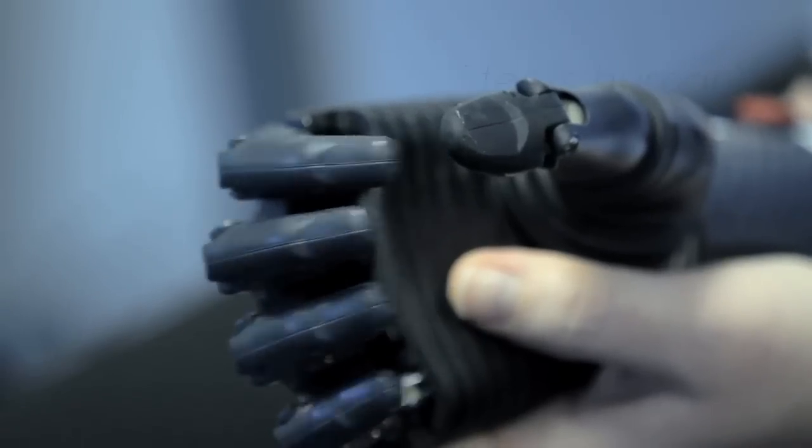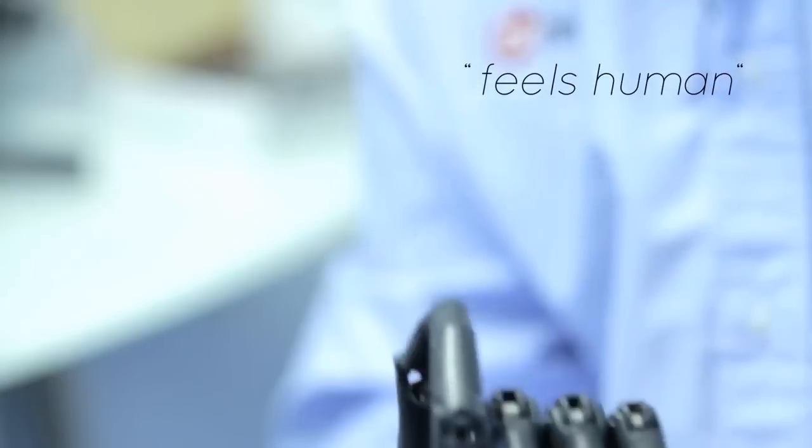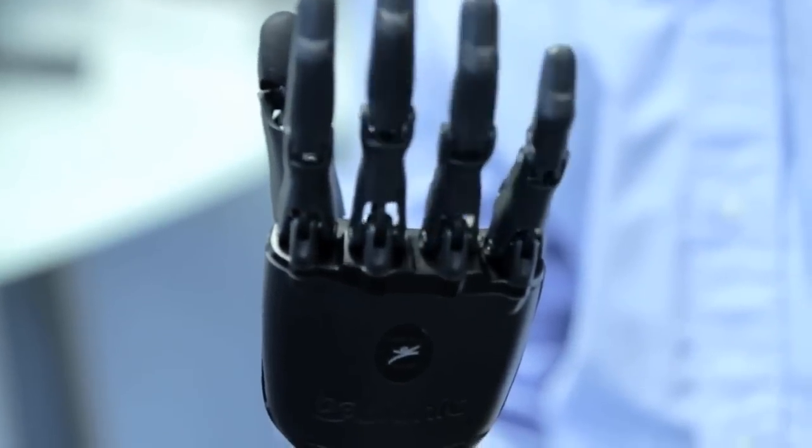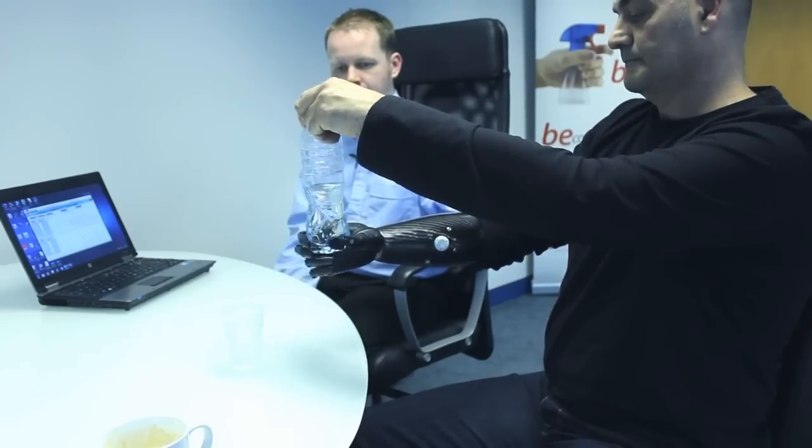Each digit of this front-line prosthetic has an individual motor creating compliant and conformable grips. A manually adjustable thumb has two locking positions with an integrated sensor for position detection. There are up to 14 grip patterns for finite performance and delicate clasping.